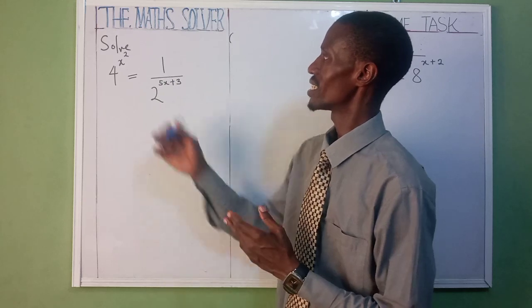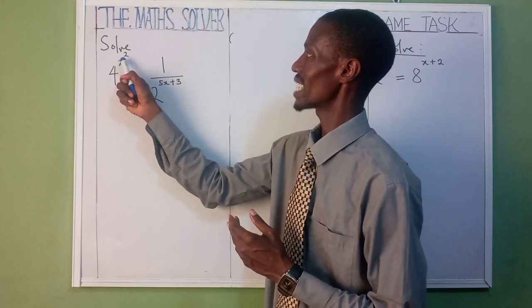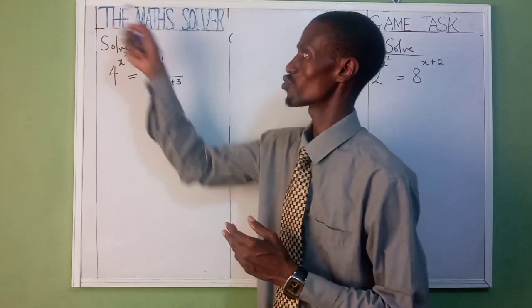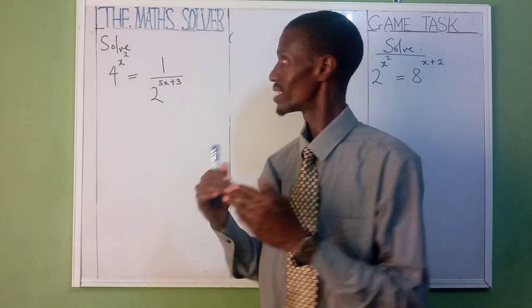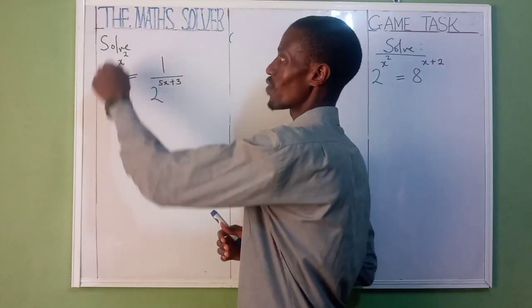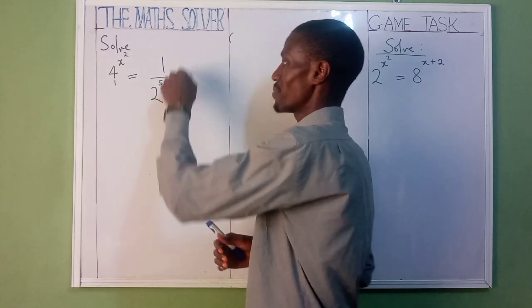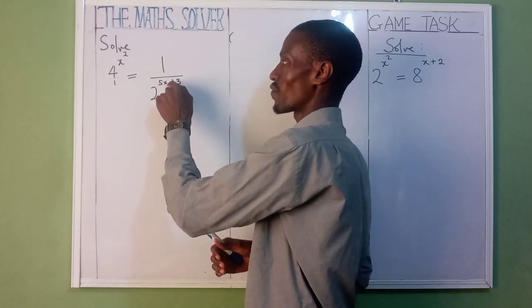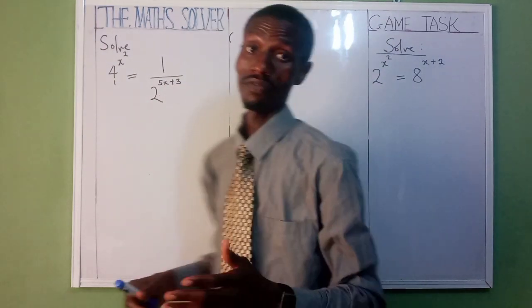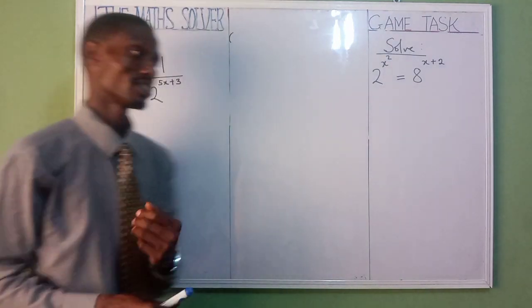As you can see, this is 4 raised to the power of x and also x raised to the power of 2. Power of power. 4 raised to the power of x, x raised to the power of 2, divided by 1 over 2 raised to the power of 5x plus 3. Very simple, let's solve it together.